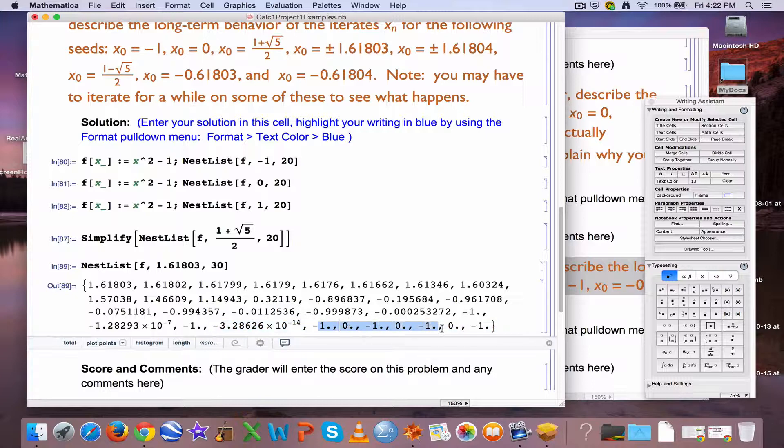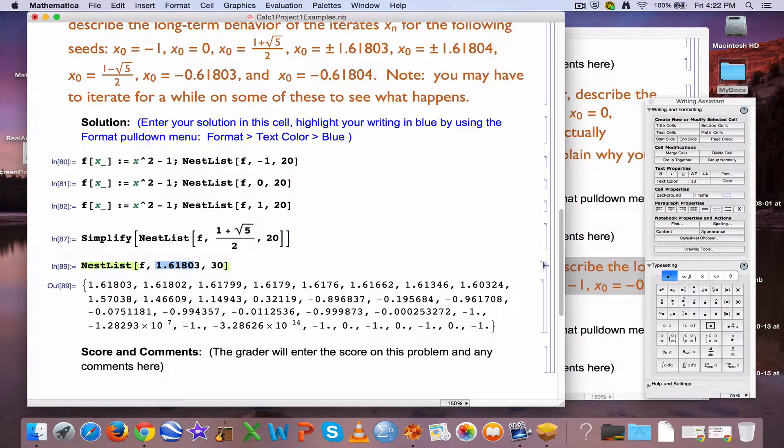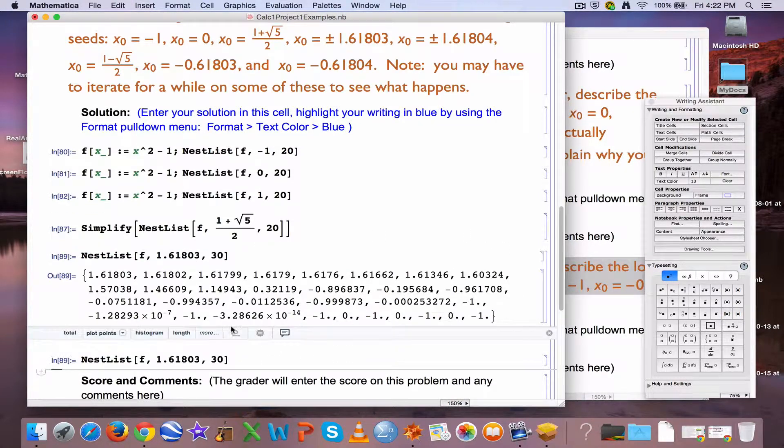Does it actually equal negative 1 and 0 eventually? No, these are approximations, but they're getting close enough to negative 1 and 0 that Mathematica is rounding them to negative 1 and 0. So they approach the cycle of period 2, though they don't equal those numbers exactly. That's what happens with this as the seed.